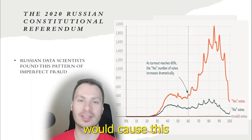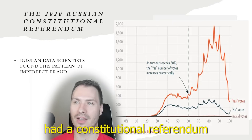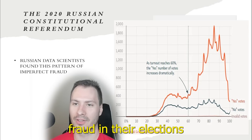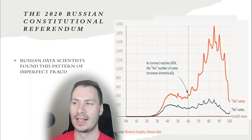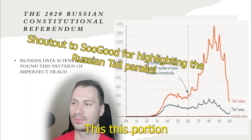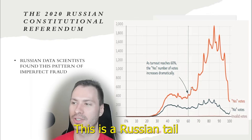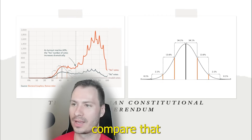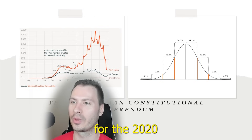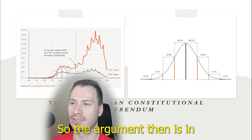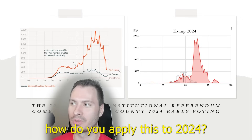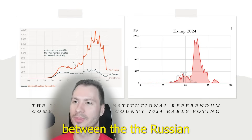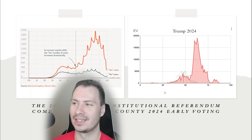What kind of manipulation would cause this? Looking externally: in 2020, Russia had a constitutional referendum where President Putin wanted to extend his terms. Russian data scientists have been finding patterns of election fraud in their elections for a while and coined the term 'Russian tail.' A Russian tail is the portion of the graph that doesn't match the normal distribution — it's an indication of imperfect fraud. It suggests the normal distribution of data that had been taken. The voting outcome for the 2020 Russian referendum doesn't match normal distribution at all — this is the Russian tail. So the argument is: how do you apply this to 2024? If we put a normal distribution over it, we may suggest that is the unmanipulated data.